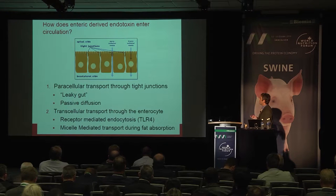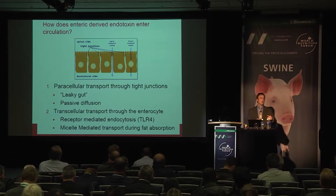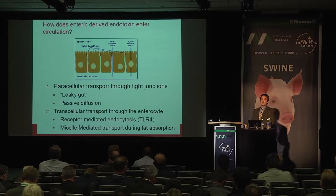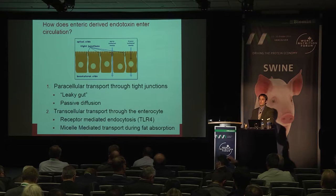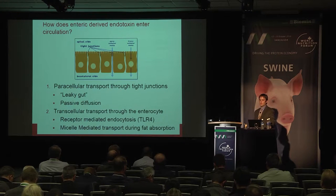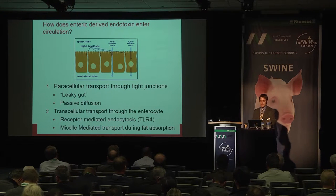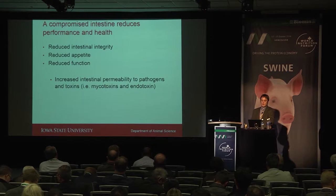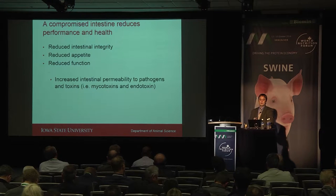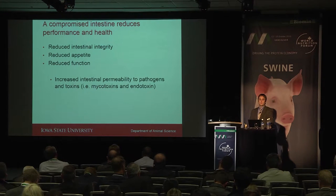Pathogens coming out of the GI tract aren't just going through paracellular passive diffusion through compromised tight junctions or adherens junctions — they can also come through the cell itself and be put into lymphatic or portal circulation. Often pathogenic E. coli and bacteria hijack natural digestive processes, coming through M-cells and clathrin-mediated uptake or through fat absorption.